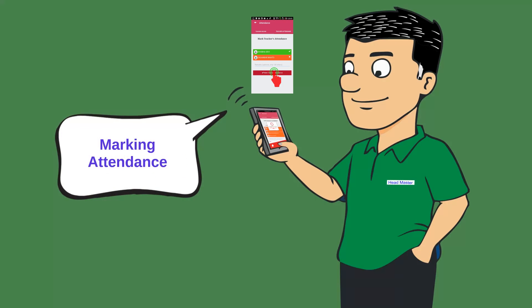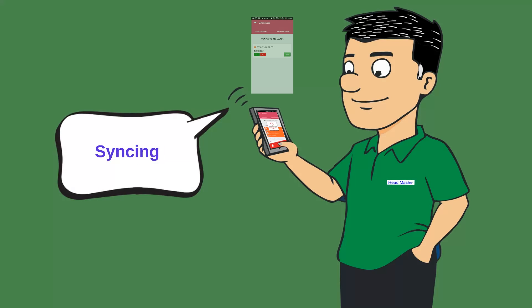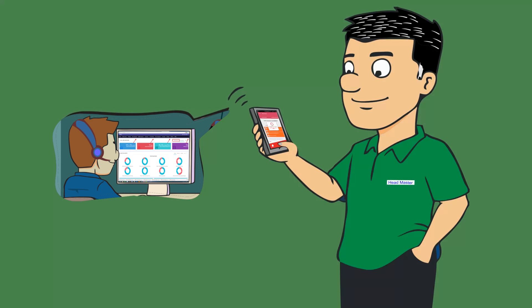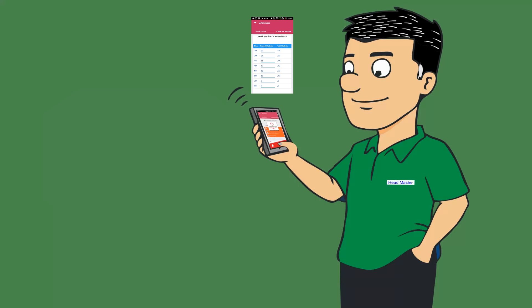In the second step, the headmaster marks the teachers' attendance. In the third step, he needs to press the sync button in order to send attendance to the server, which is analyzed at the district control room using the analytical web portal. It works with internet as well as without internet, which makes it very effective even in rural areas. Similarly, he marks and syncs students' attendance.